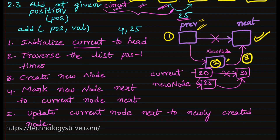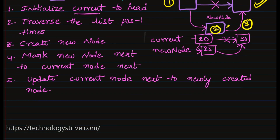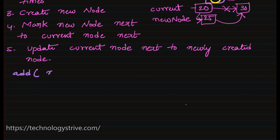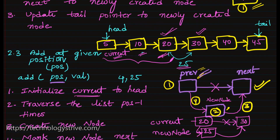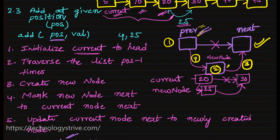This is how we add a new node at a given position. Sometimes instead of a position, the requirement may be to add after a given node — with method signature add(node, value). In that case only steps two through four need to be done, since we already have the node reference. We have now covered three different types of add operations.